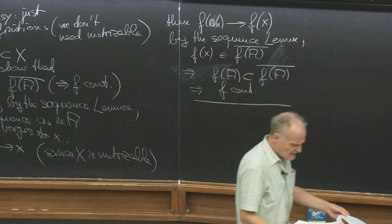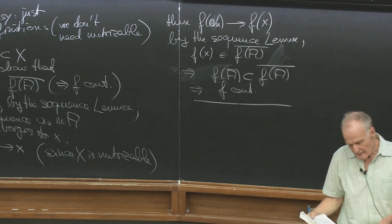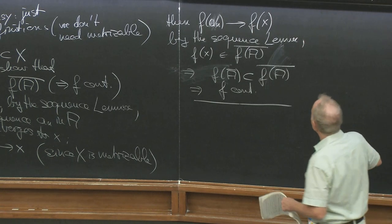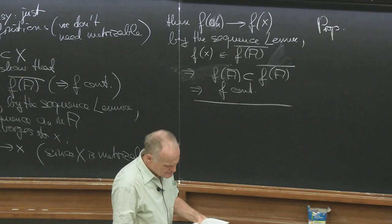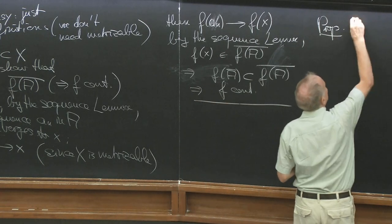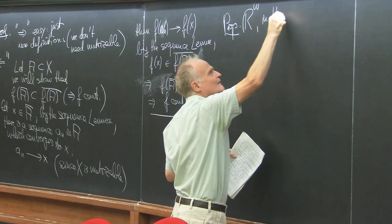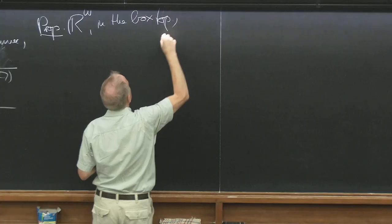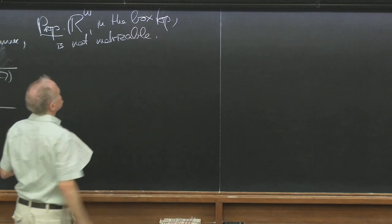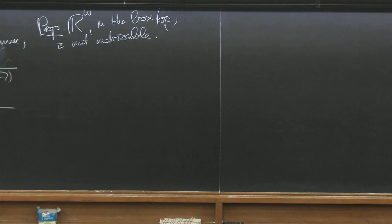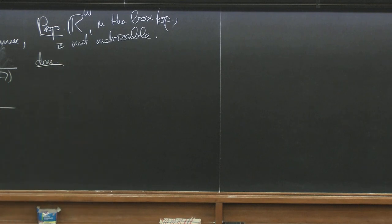Another application of the sequence lemma: Proposition — R^ω in the box topology is not metrizable. For the box topology, nothing is nice, still we have to prove it. The proof is interesting — short, easy, but interesting.